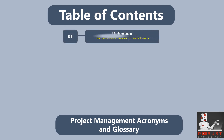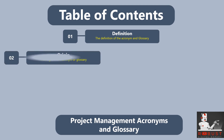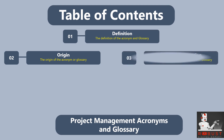Table of contents. Definition: We start by providing a clear and concise definition of the acronym or glossary term, highlighting its significance in the field. Origin: We discuss the origin or source of the acronym or glossary term, providing relevant background information or historical context to help you understand how it emerged.